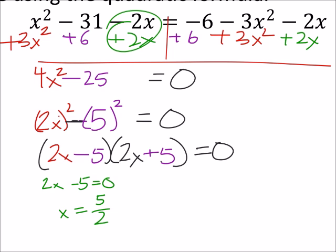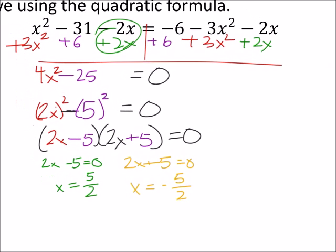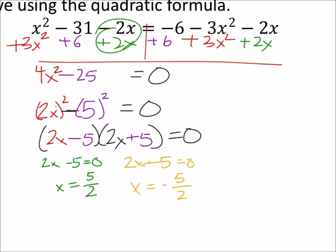and then on the other side, we get 2x plus 5 equals 0, which means x is negative 5 halves. Oh, wait a second. Well, let's do it with the quadratic formula now, which means that really this ends up being 4x squared plus 0x minus 25, and we did find that 0x.